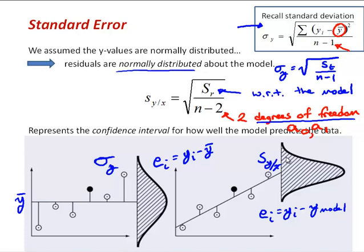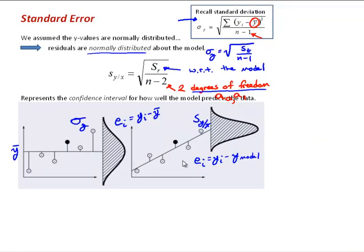And the shape of that bell curve is defined by the standard error, S Y X. And if you recall, what we're saying there is that our model then would predict 95% of the data, Y i, within twice that standard error.